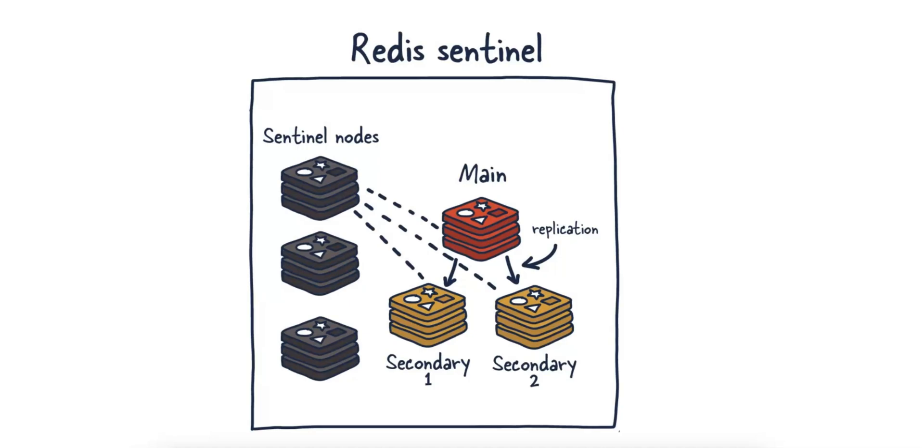So this works in four steps. Step one is that a cluster of Redis Sentinel nodes monitors the health of the master and slave instances. Step two, if the master goes down, Sentinel initiates a failover. Step three is slave promotion, in which the Sentinel elects one of the slaves as the new master. And step four is reconfiguration, in which the clients are informed of the new master, and the other slaves are reconfigured to replicate from the new master.